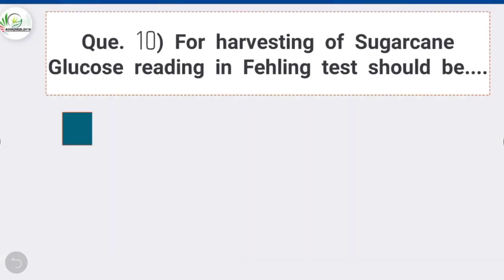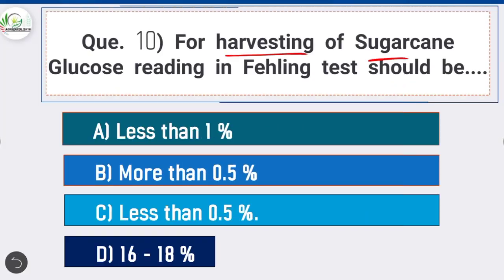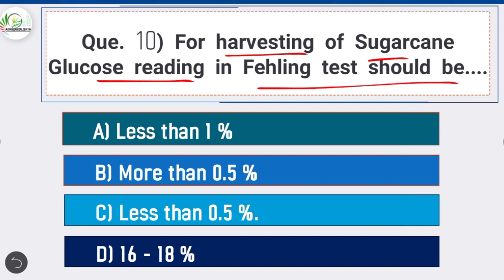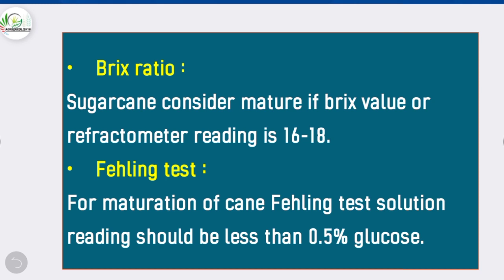Question 10: For harvesting of sugarcane, glucose reading in the failing test should be — option C is correct: less than 0.5%. Cane maturity can be measured by: Brix ratio — sugarcane is considered mature if Brix value or refractometer reading is 16 to 18 (juice taken from middle portion of stalk); failing test — glucose reading should be less than 0.5%.